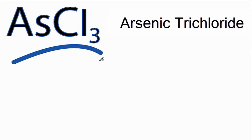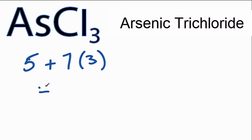This is the AsCl3 Lewis structure. For the arsenic atom, we have 5 valence electrons, plus 7 for the chlorine. We have 3 chlorine atoms for a total of 26 valence electrons.